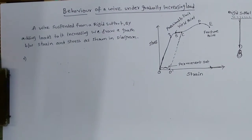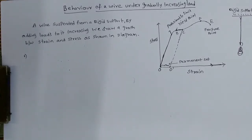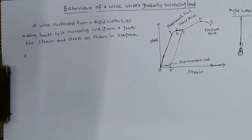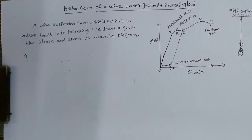What is the use of knowing this behavior? By using this behavior, we can divide metals into two types: brittle metal and ductile metal. Ductile metals are those which are elongated more — such as copper, steel, iron, and gold. Brittle metals are those which can be easily broken, such as ceramic and glass. By using this concept, we can design which metal is used for which purpose.